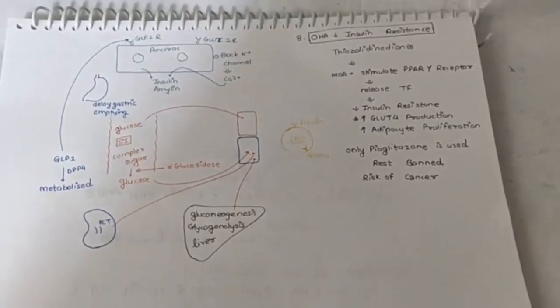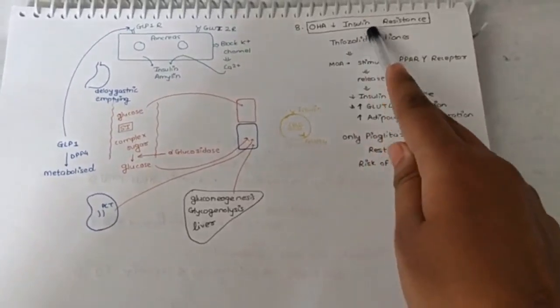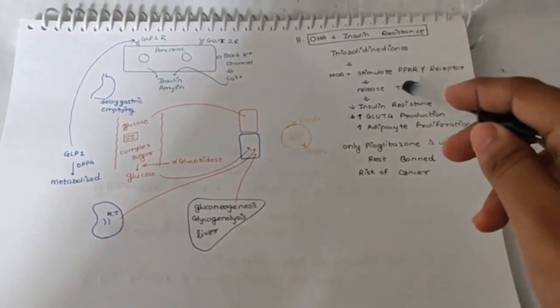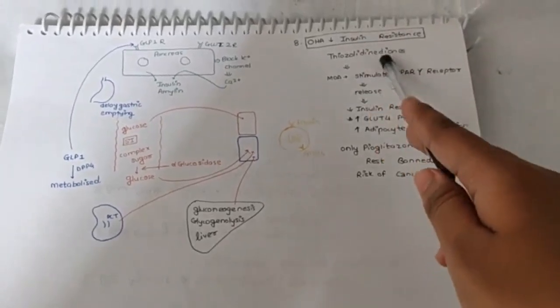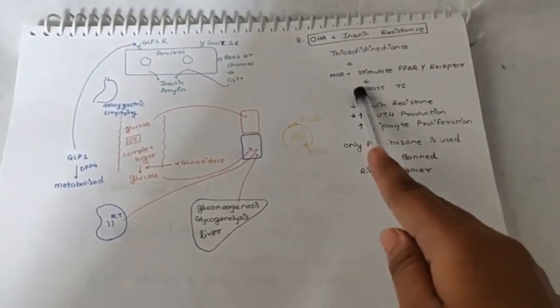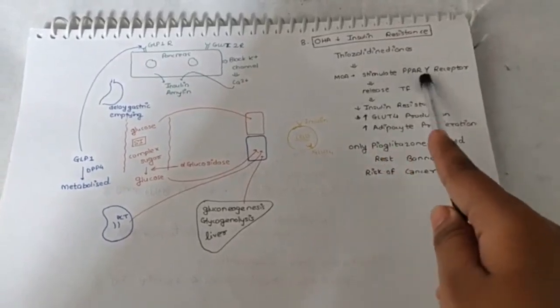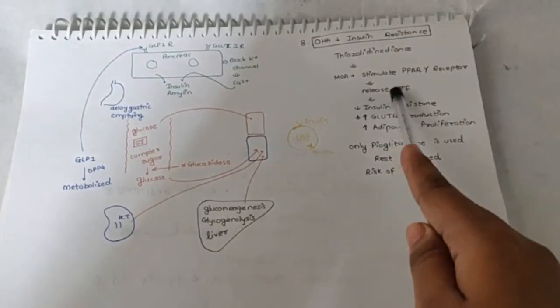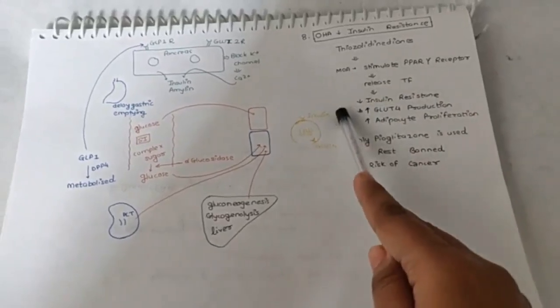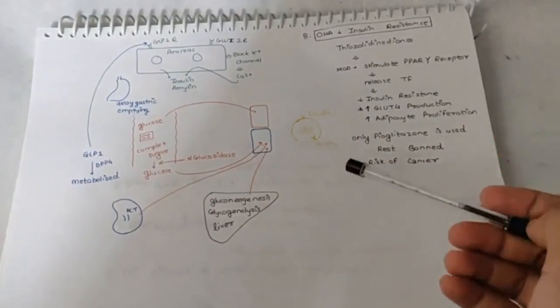Moving on to the next class of drug, the oral hypoglycemic agent which is responsible for reducing the insulin resistance. Insulin resistance is seen in type 2 diabetes mellitus. Therefore this class of drug is useful for type 2 diabetes mellitus. That is thiazolidinediones. How does it act? It stimulates PPAR gamma receptor which is a nuclear receptor. After stimulating this receptor, it will lead to release of transcription factor. This transcription factor will have three effects. First, it will decrease the insulin resistance.